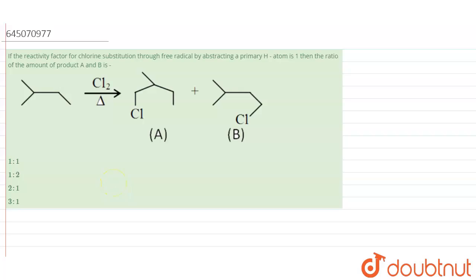It is given that we have the reactivity factor for chlorine substitution through free radical by extracting a primary hydrogen atom is one. Then the ratio of the amount of product A and B is, we need to find the concentration or ratio of the product A and B.